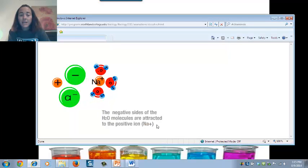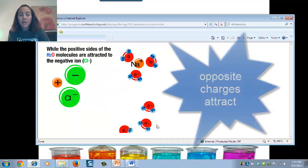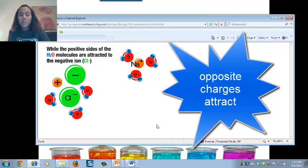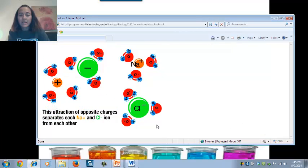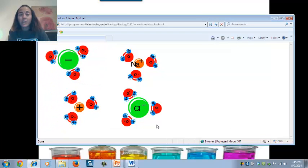The negative side of the waters are attracted to the positive sodium ions. The positive hydrogens of the water are attracted to the negative chloride ions. This happens over and over again until the salt is totally dissolved.